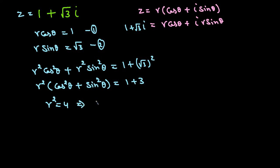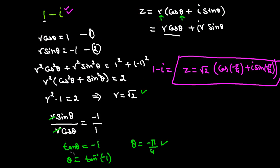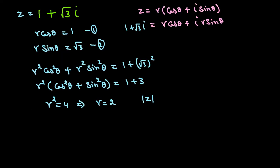Therefore R equals 2 (taking the positive value since modulus is always positive). Now we need to find angle theta. Just as in the previous example, we divide equation 2 by equation 1 to find tangent theta, since that gives us the argument of the complex number.